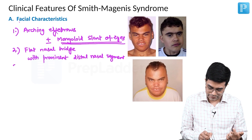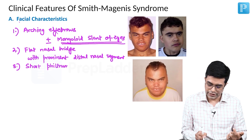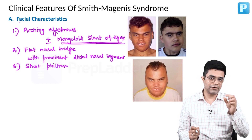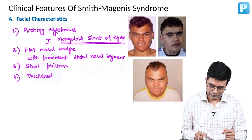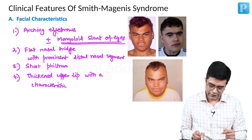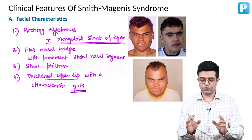Thirdly, these patients have a short philtrum — the gap between the columella and upper lip is very small, so the upper lip almost touches the columella. Fourth, they have a thickened upper lip with a characteristic abnormal grin. These four facial features are key findings in Smith-Magnese syndrome.